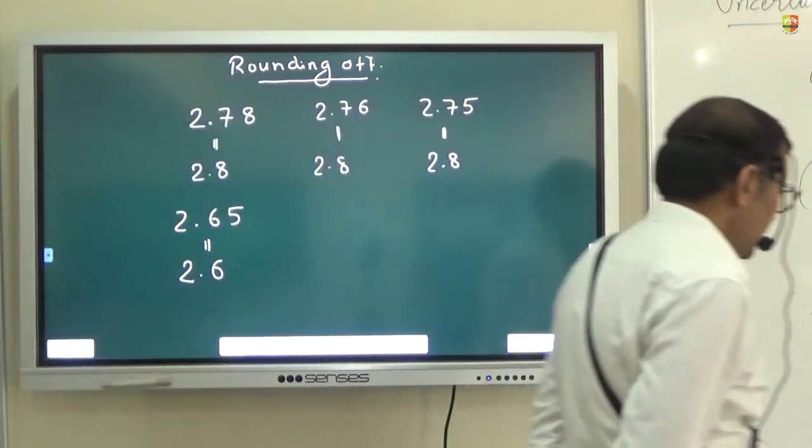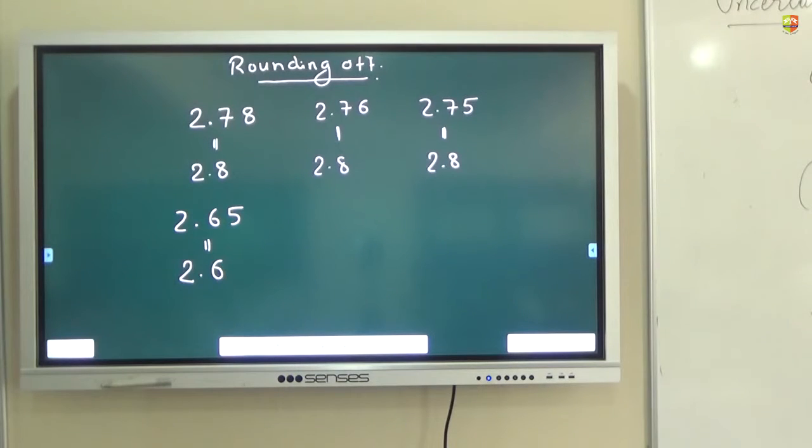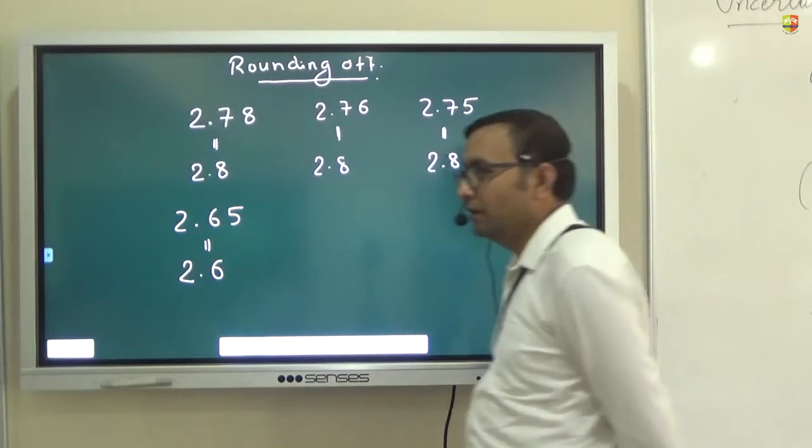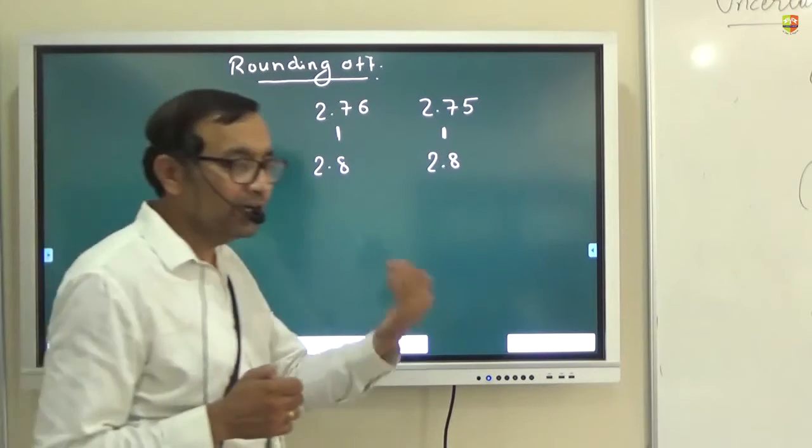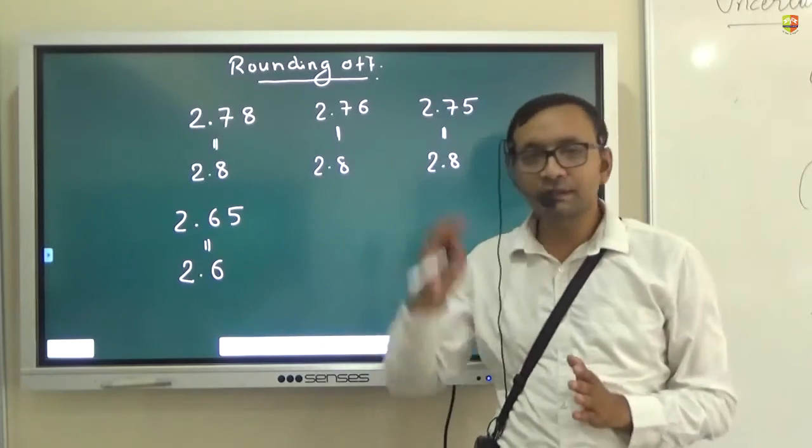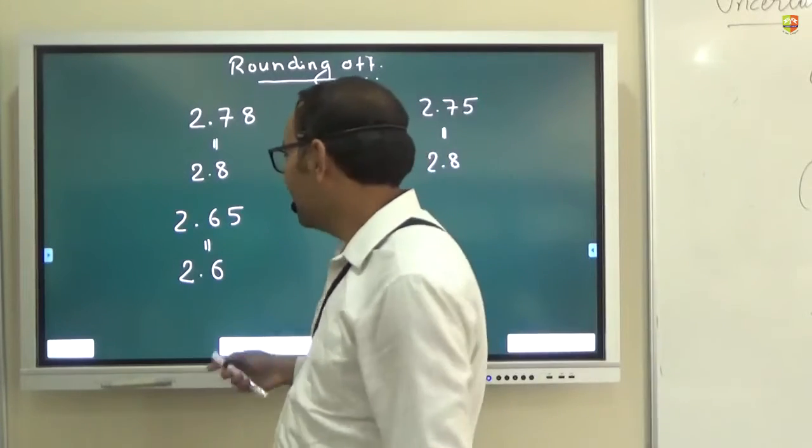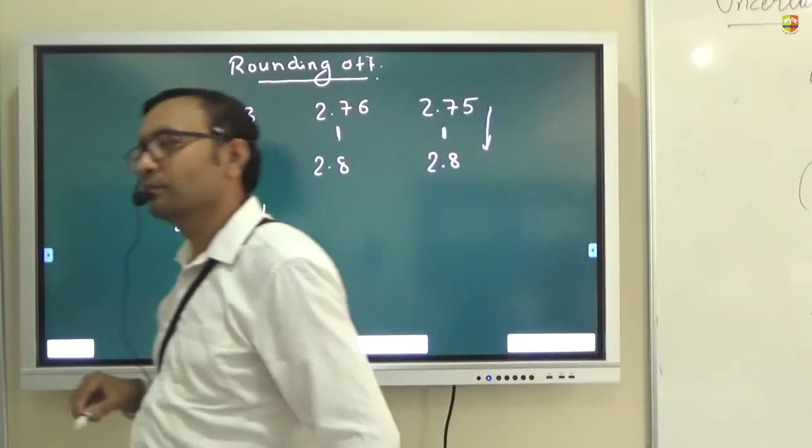The rule says this: if a digit preceding 5 is an odd number, then you increase that number by 1 and drop 5. Simple—you have to make sure it becomes even if it is 5. So if there is a digit which is an odd number, then you have to increase it by 1 if you are rounding off 5. But then if the preceding digit is already an even number, then you should leave 5—you should just drop 5. You should not increase it. So that is like 2.65 is 2.6 and 2.75 becomes 2.8.